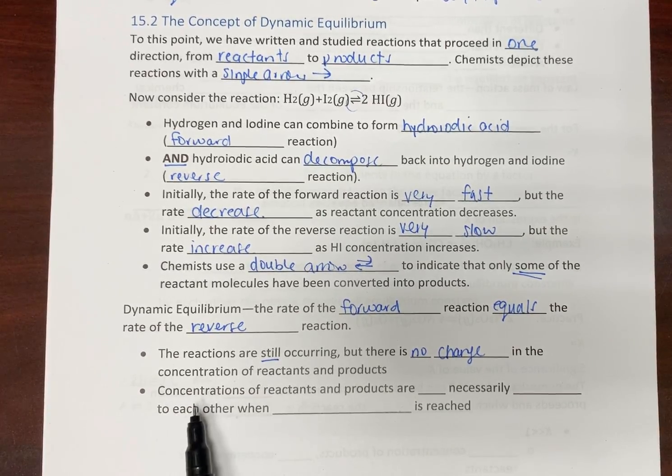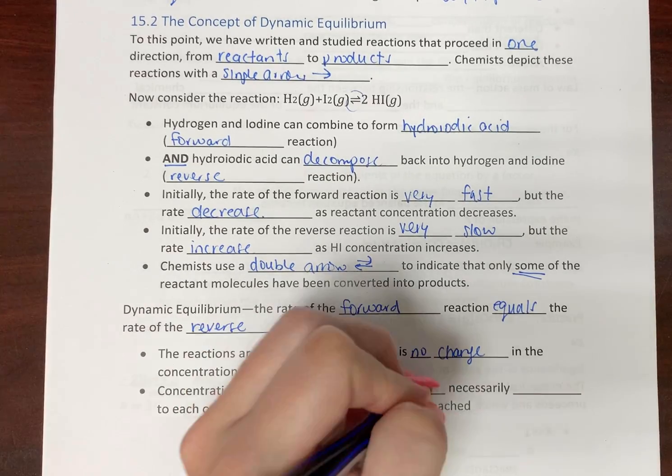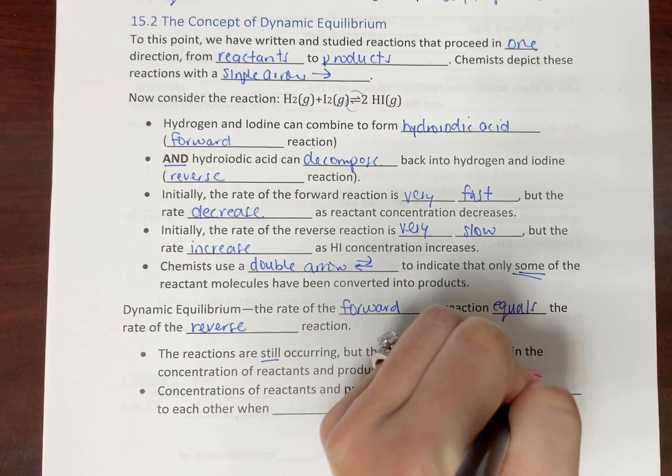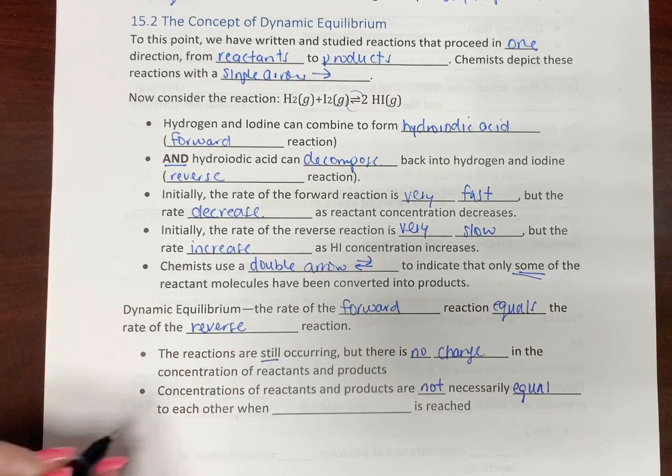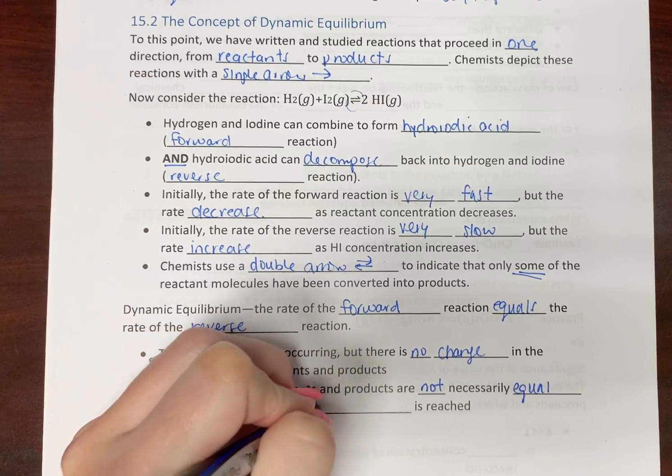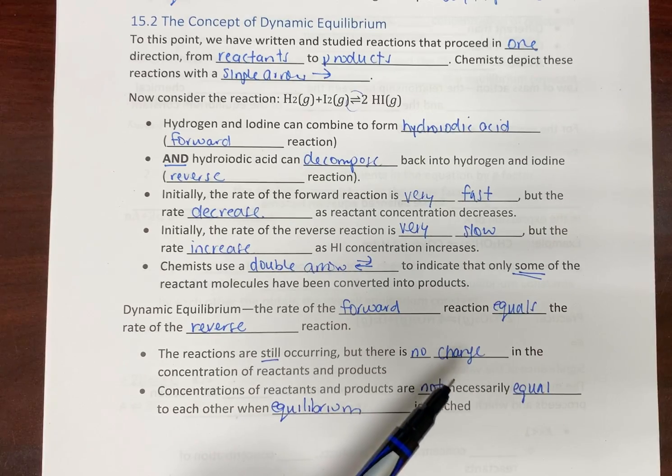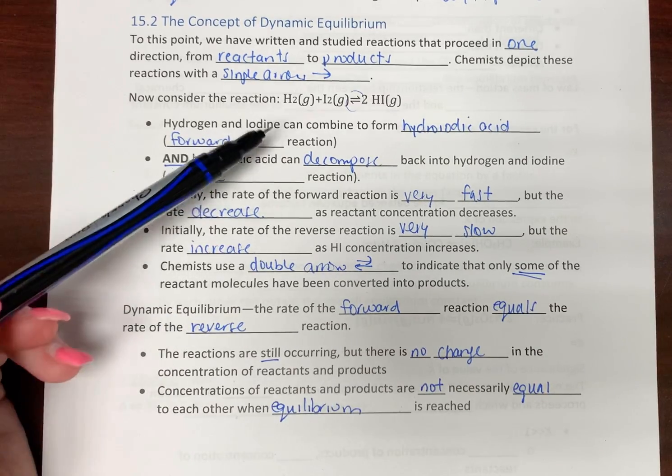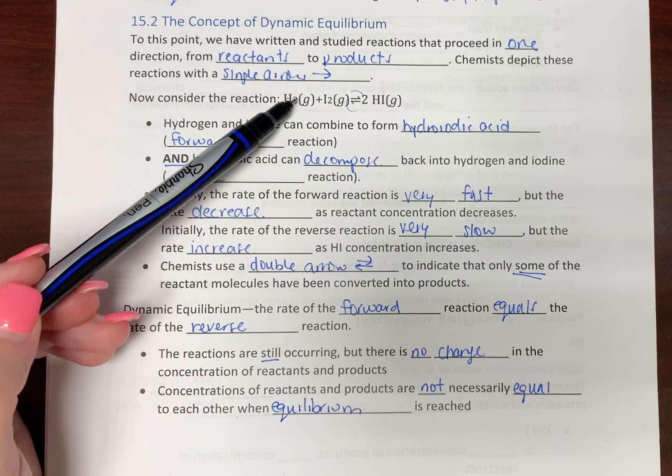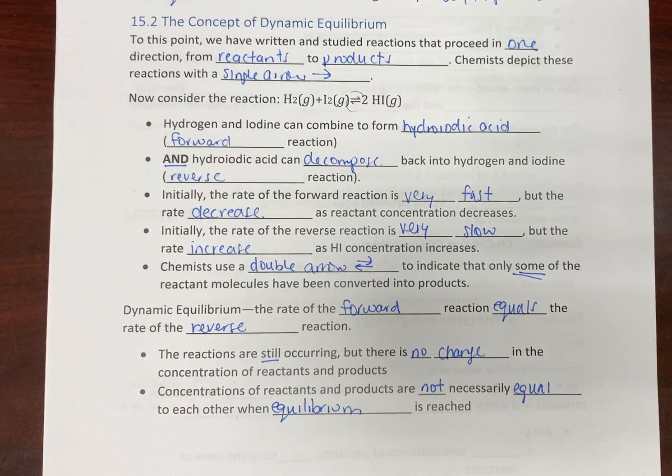Now the concentrations of our reactants and the products when we're in equilibrium are not necessarily equal to each other once equilibrium is reached. Not all reactions go all the way to completion, but some of them—that doesn't mean we're in equilibrium where it's going to be half reactants and half products. That doesn't necessarily mean it's going to be the case. It might be, but more than likely it's not.